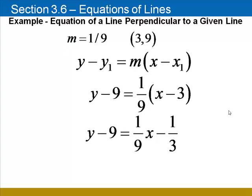Distribute 1/9 through. 1/9 times negative 3 is negative 3/9, or negative 1/3. To finish, we're going to add 9 to both sides. Now when you add 9 to negative 1/3, remember that 9 is the same as 27/3. Negative 1 plus 27 is a positive 26, so the equation is y equals 1/9 x plus 26/3.